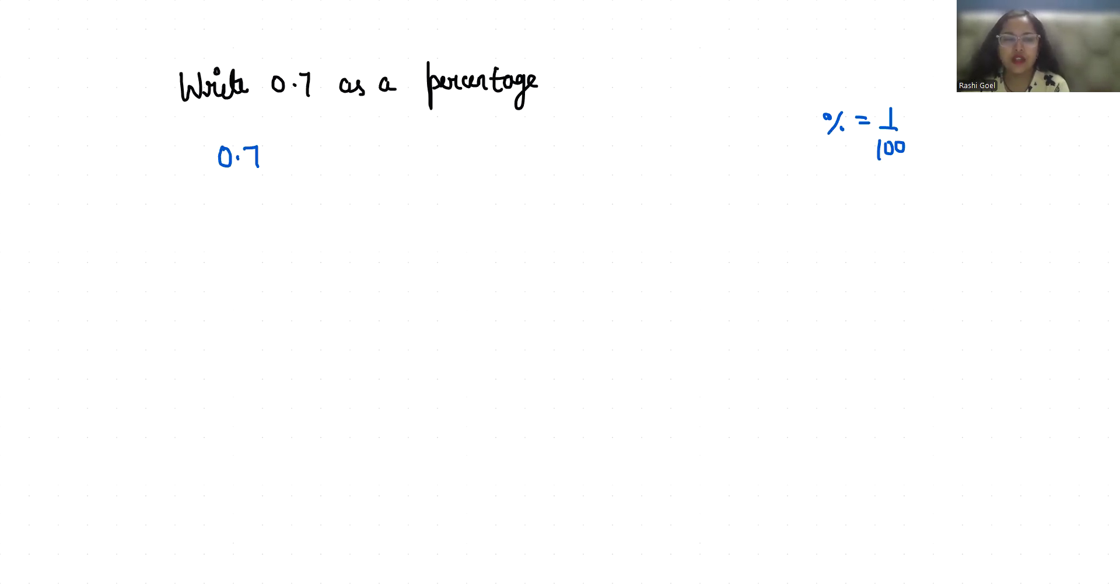So let's start. First we are going to remove this decimal. So I am going to write 0.7 as 1 to convert it to fraction form.